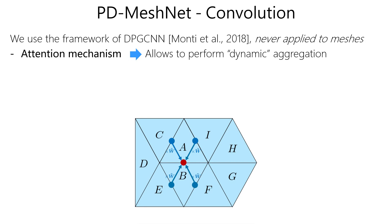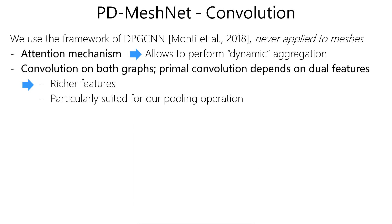Feature aggregation — here shown for the dual graph — is performed through an attention mechanism that allows dynamically weighting the kernels depending on the local properties of the mesh. Convolution is performed on both graphs, which allows extracting richer features and is particularly suited for our pooling operation.